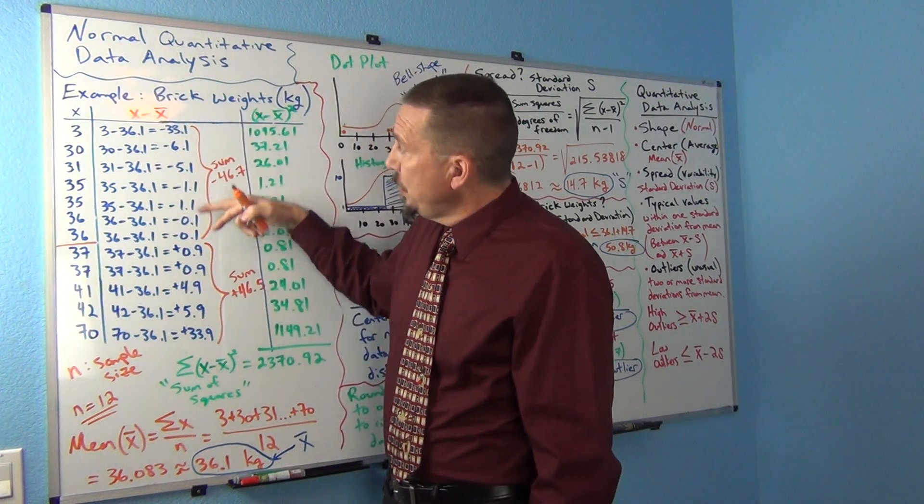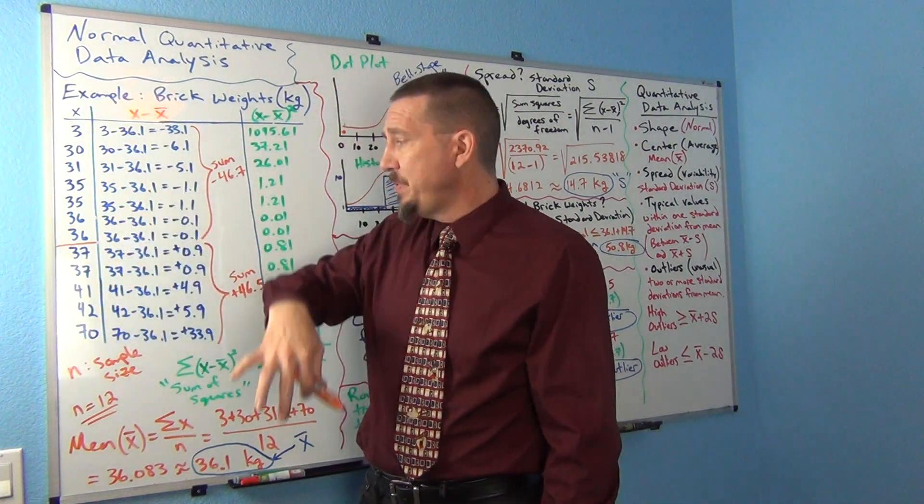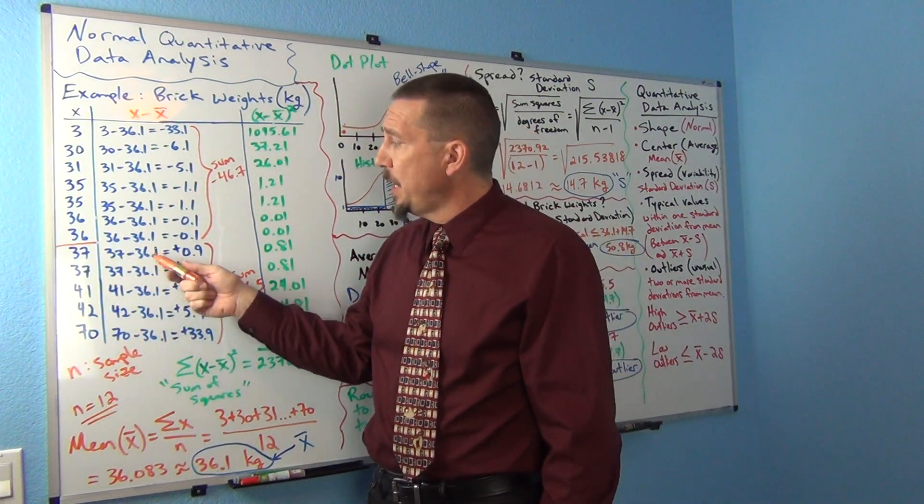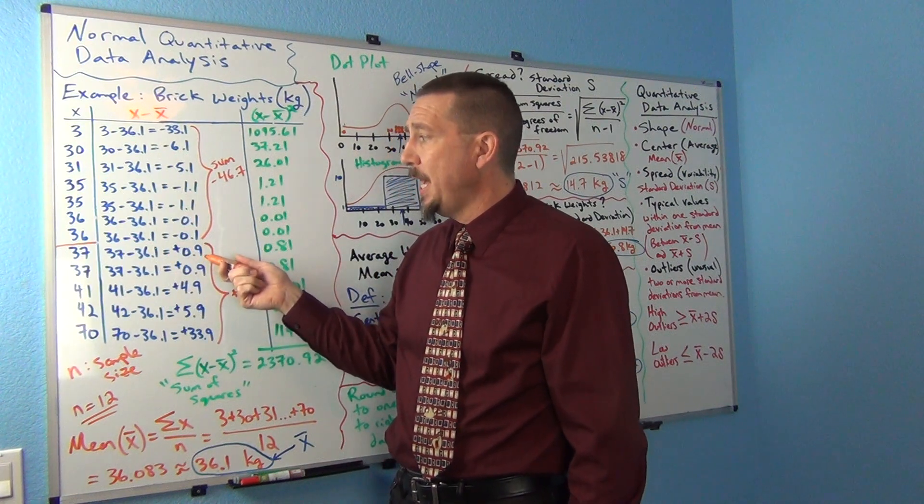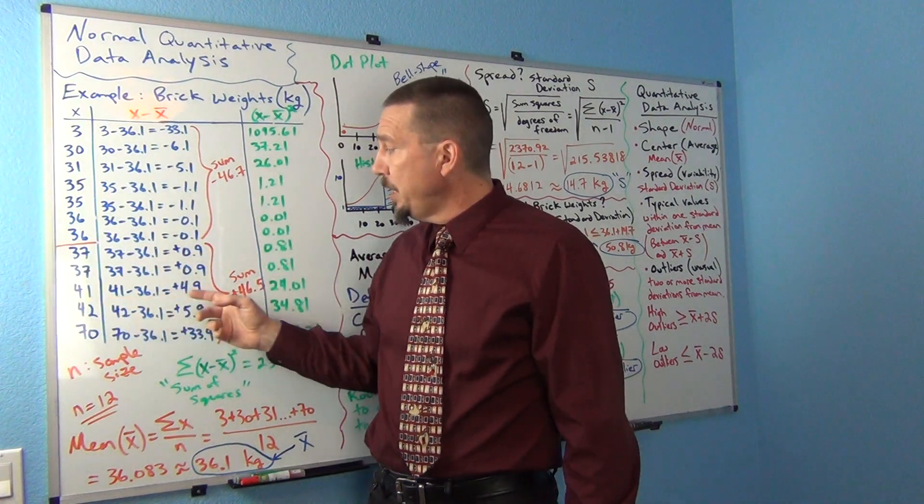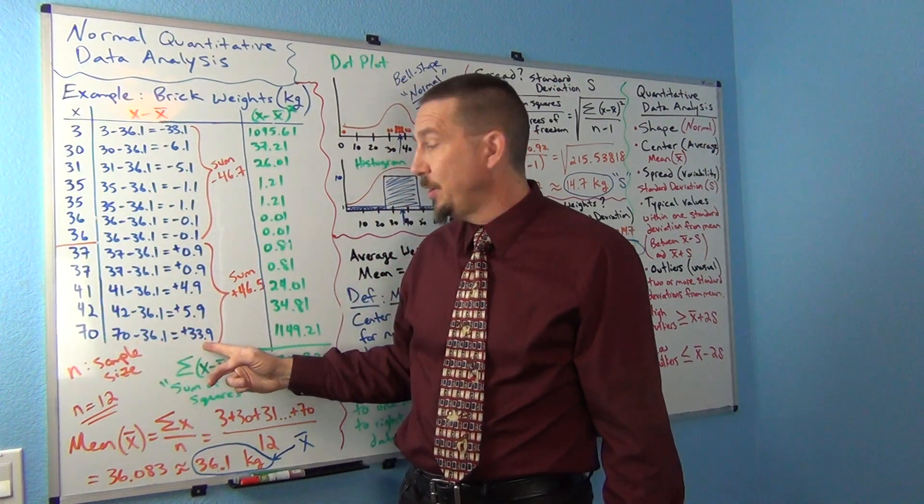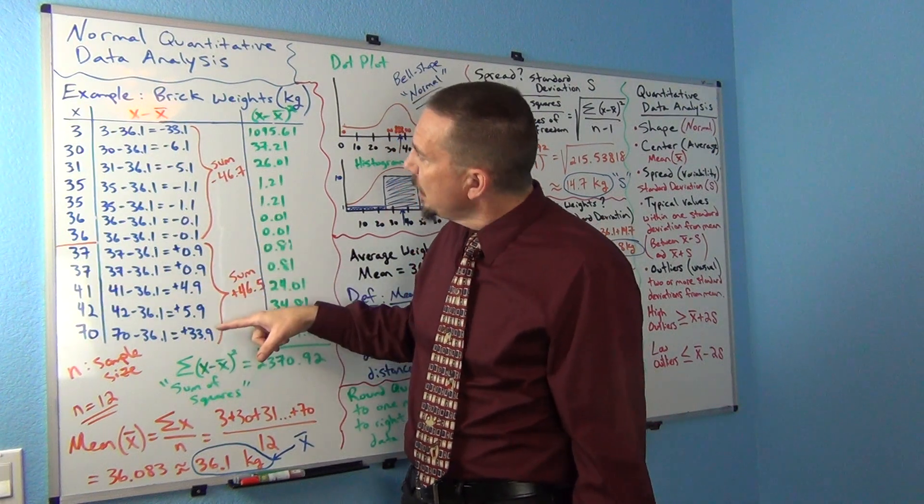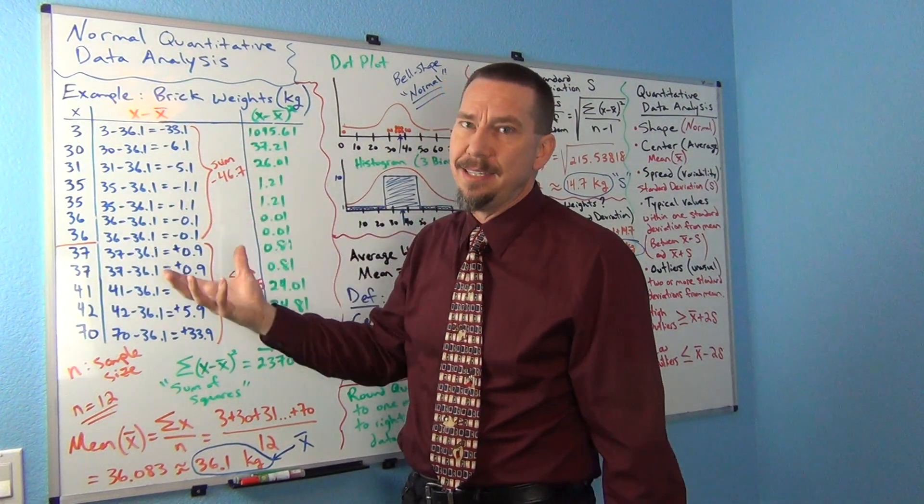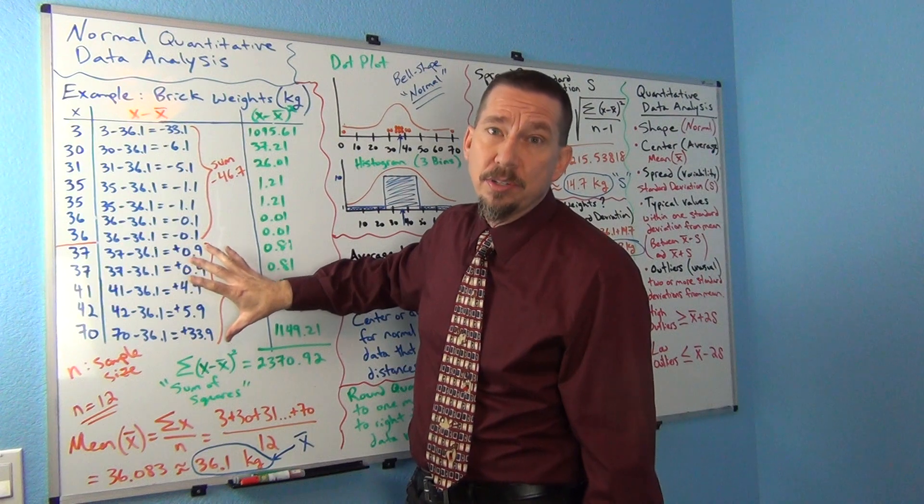Now if I added up all of those differences, I'd get about negative 46.7. Now look at these 5 numbers that are above the mean. Let's see how far they are from the mean. So 37 minus 36.1 would be positive 0.9, about 0.9 kilograms above the mean. 41 is 4.9 kilograms above the mean. 70 is 33.9 kilograms above the mean. If you added these up, it should come out to about the same as the numbers below the mean. That's what it means that the mean balances distances.